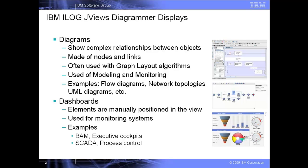A diagram display built with JVUES Diagrammer can be used for a wide range of custom modeling or monitoring applications. Diagrammer is also used to create another type of display called a dashboard. The dashboard display typically has no interconnections between the objects, and the elements on the screen are manually positioned by the user, instead of relying on the graph layout algorithm to position them.